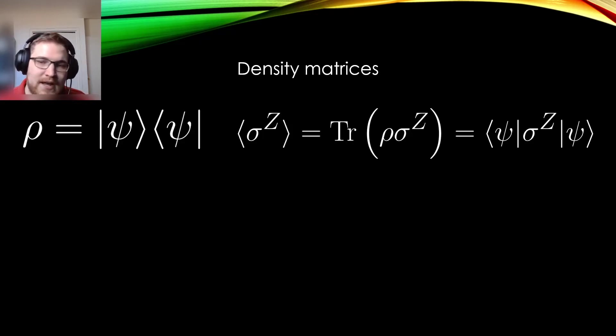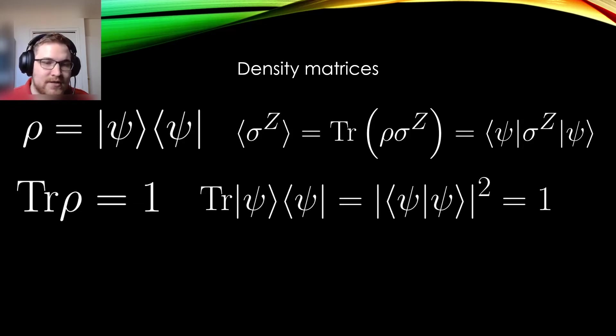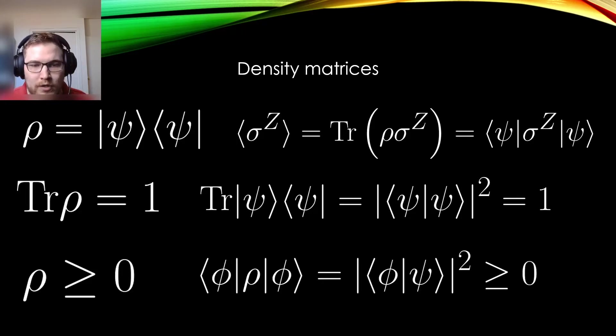The density matrix has two fundamental properties that we will see here, one being that its trace is 1. In the context of a pure state, which we're considering here, this is actually extremely straightforward to show. And it is also a positive operator, meaning that if I take any state vector from our state space and perform the following operation, then the result is always greater than or equal to 0, which is also very straightforward to show.